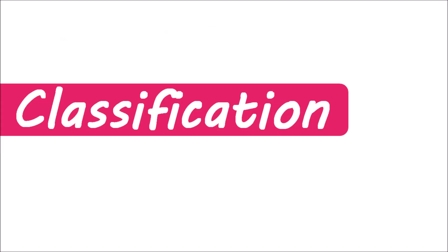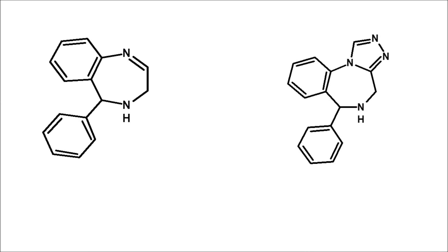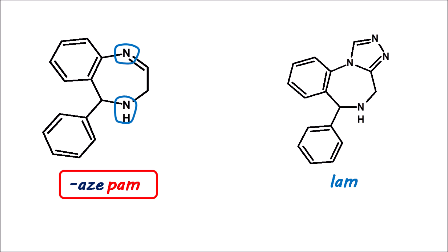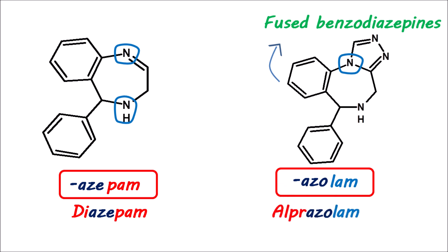Now let's see the classification of benzodiazepines. Benzodiazepines mainly exist in two types of structures. The first one can be denoted by the primary suffix -pam, whereas the second structure is denoted by the suffix -lam. In the first structure, we can observe two nitrogens at the first and fourth positions, indicated by the suffix -az, so the entire suffix is -azepam, and many benzodiazepines exist with this suffix. Diazepam is one example. But in the second structure, one of the nitrogens is included in the fused ring system, denoted by the term -azo, so the entire suffix is -azolam. Here, -azo indicates it is a fused benzodiazepine. Alprazolam is one of the examples in this category.